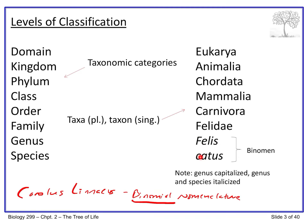Notice that Felis, the genus, is always capitalized, while catus, the species name, is always lowercase. When you write it out by hand you underline it; if you type it out, you can either underline it or, more commonly, put it in italics. That's convention.